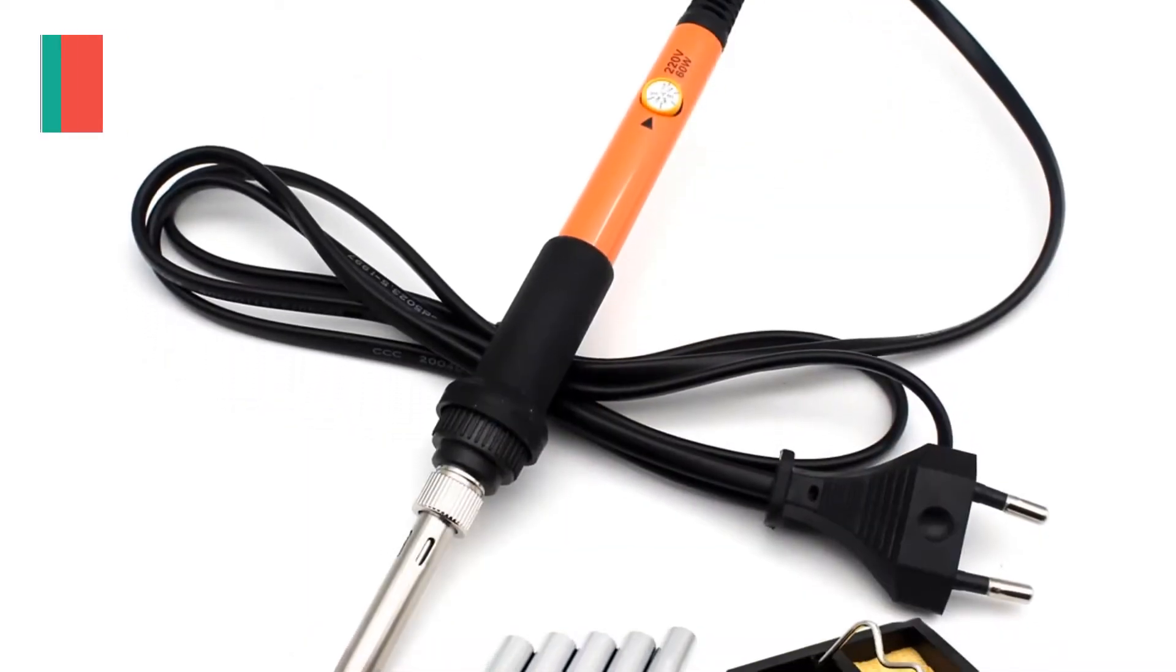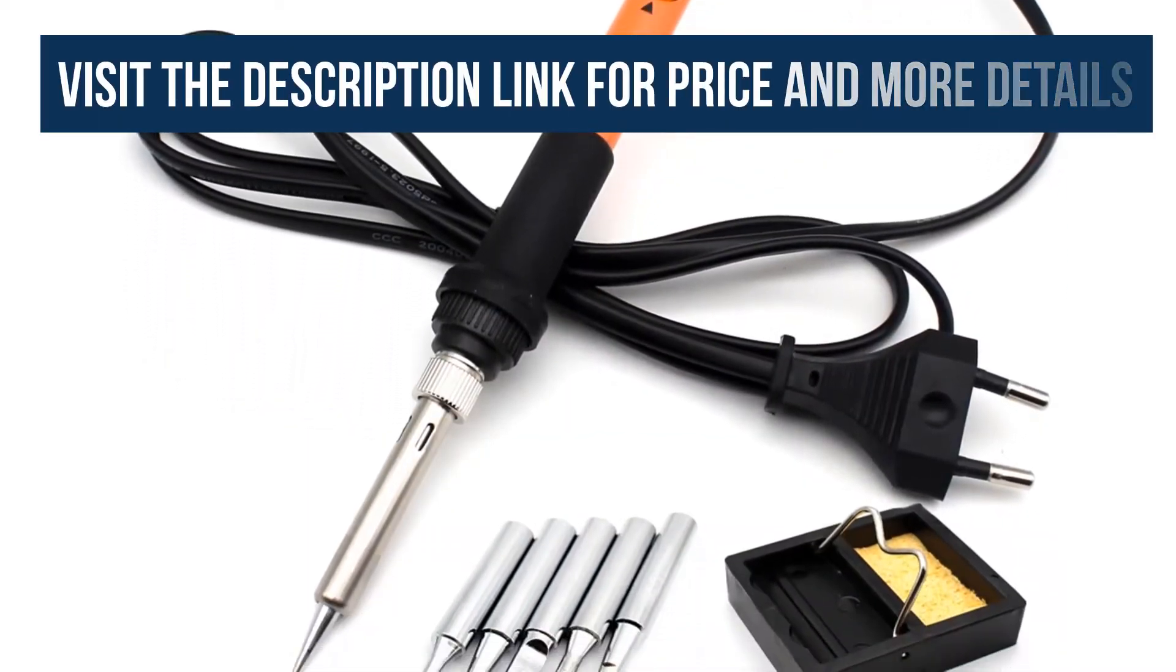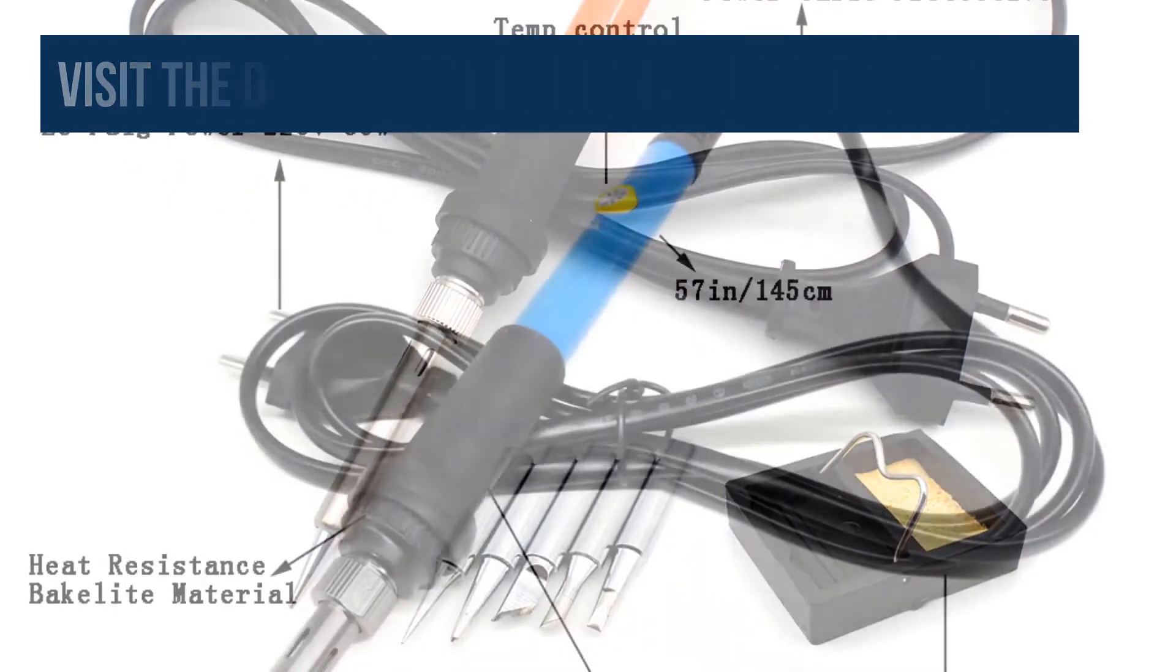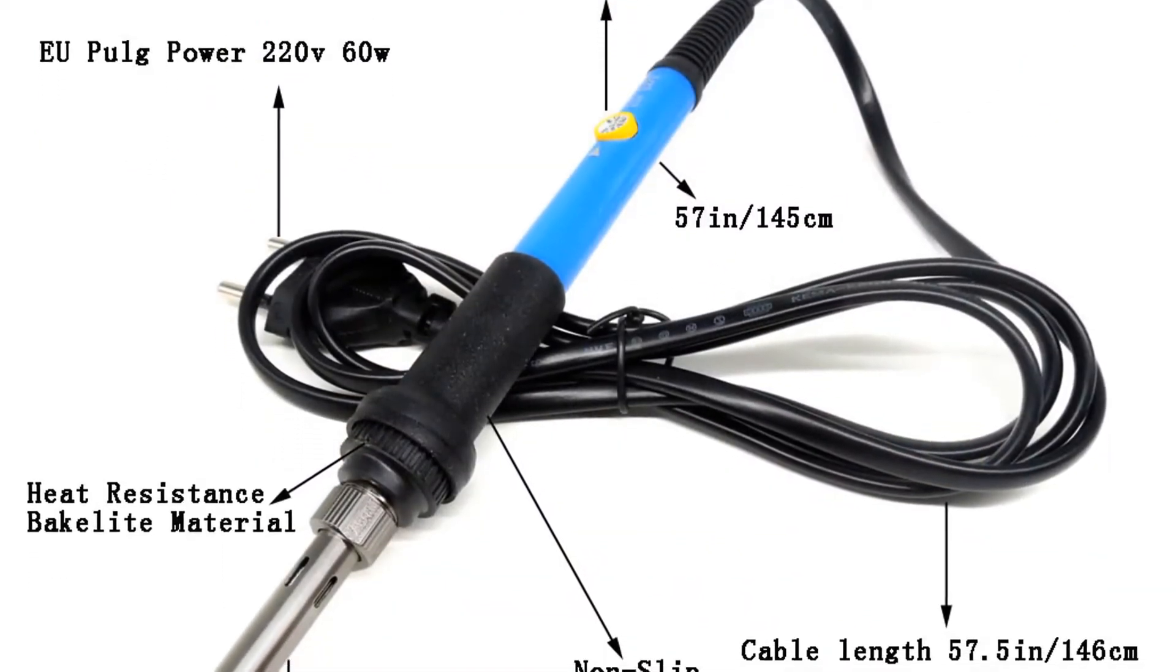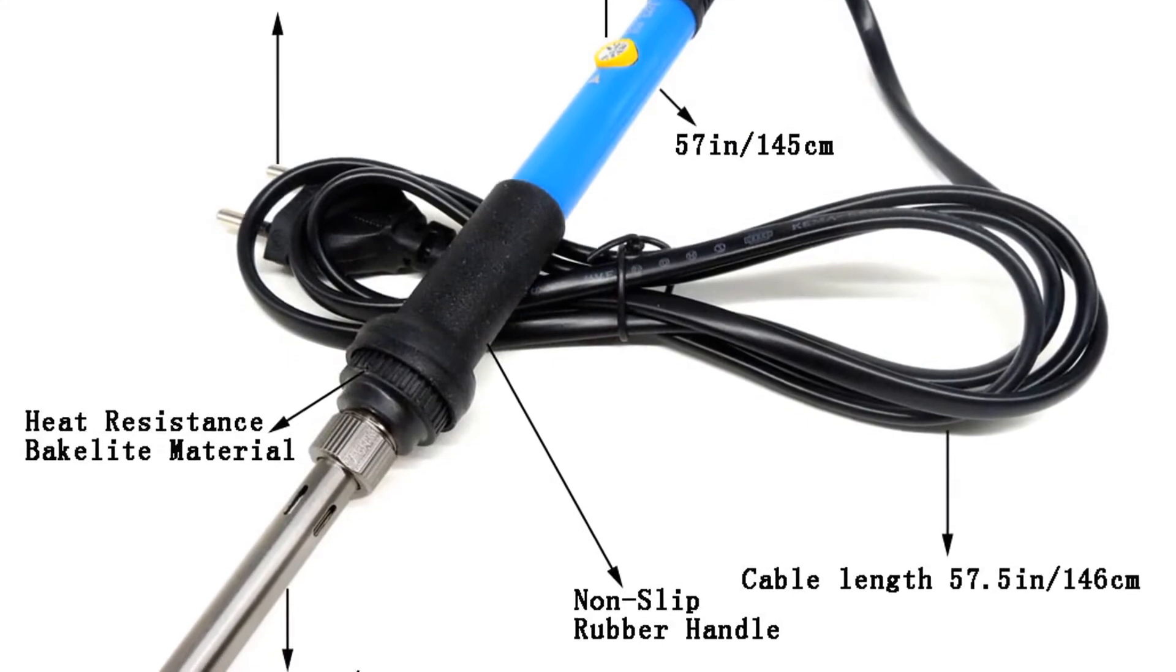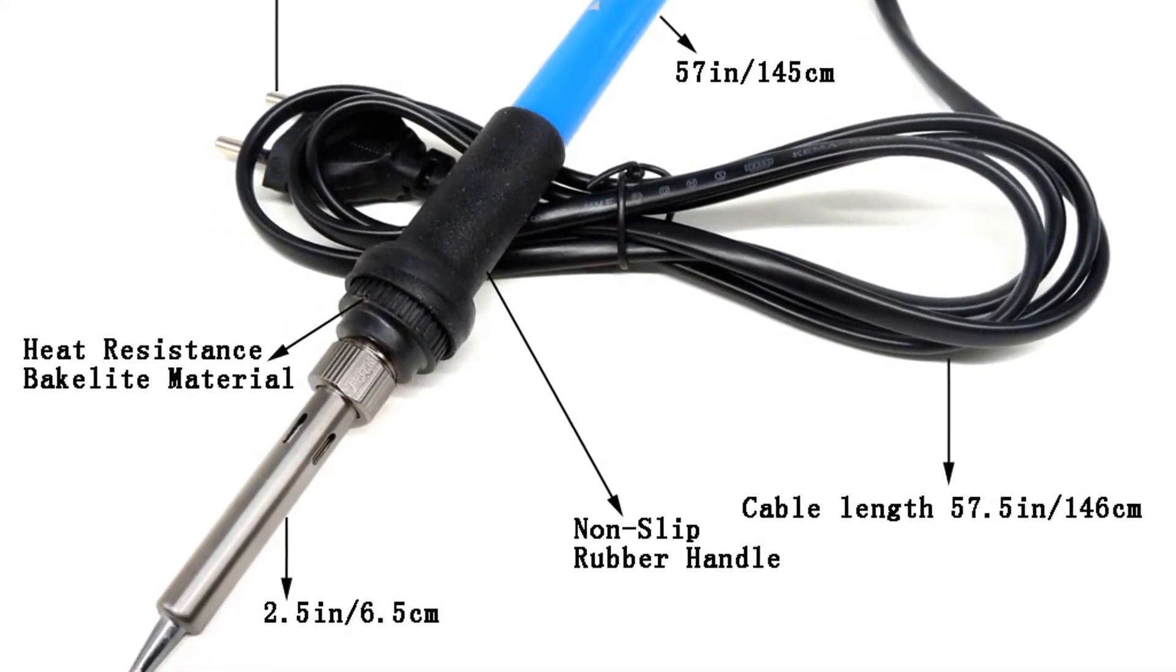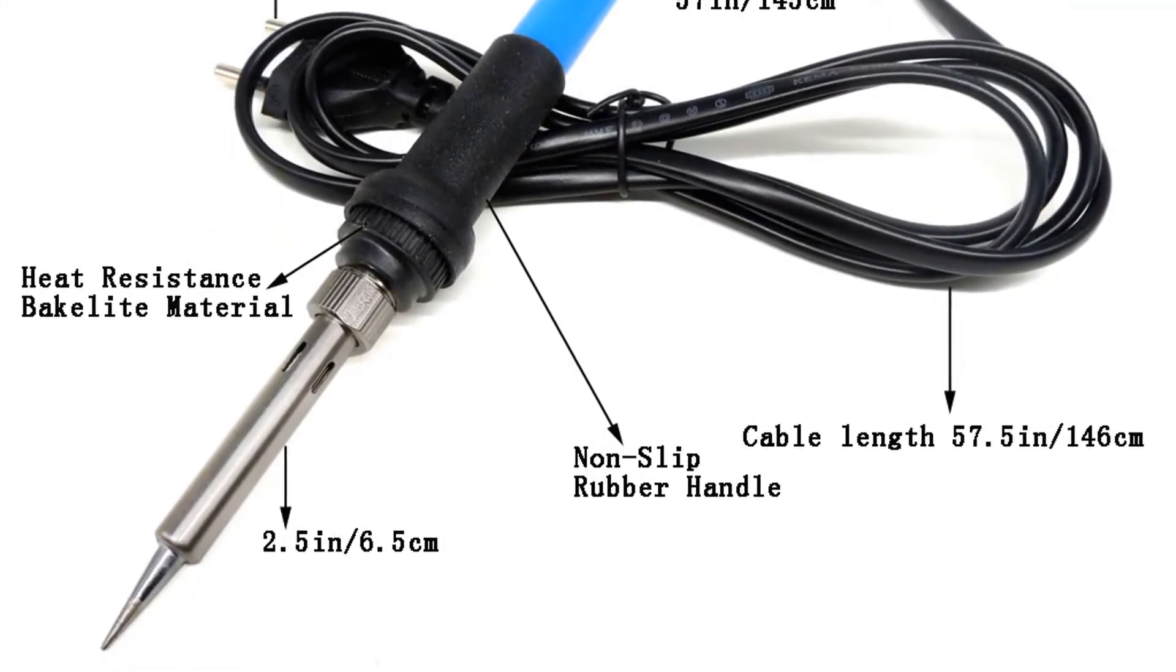Adjustable temperature controlled soldering iron, 200 to 450 degrees centigrade. There is a special thermostat circuit to control the temperature and you can adjust the temperature according to your need by the knob wheel on the electronic soldering iron.